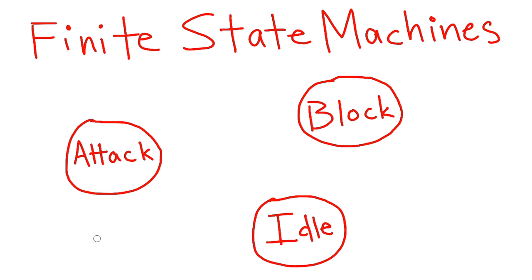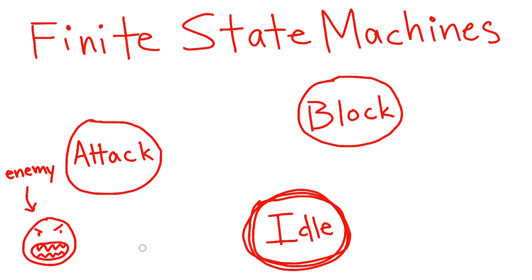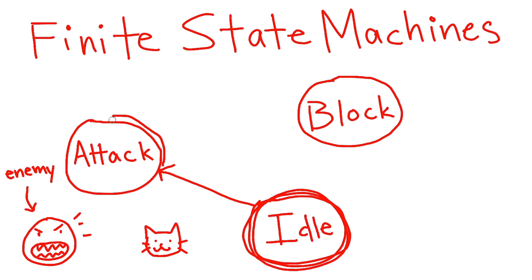Anyway, whether you've studied it or not, a finite state machine is basically a bunch of nodes or states with transitions between them. In our case, our states are what our enemy is doing — actions like attack, block, or stay idle. So let's say we start off idle, we're doing nothing, and then a player comes in range. This triggers the transition from idle to attacking.